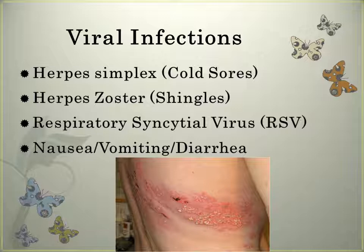RSV, the respiratory syncytial virus, is the most frequent cause of hospitalization for children under one year of age. It is a significant risk factor for the development of asthma up to age 13. It affects the epithelial cells of the respiratory tract and can cause those cells to shed into the bronchioles, causing obstruction. Signs and symptoms initially include rhinorrhea, pharyngitis, coughing, sneezing, wheezing, possible ear or eye drainage, and intermittent fever. As the illness progresses, you might see cyanosis, increased coughing and wheezing, tachypnea, and retractions. In severe illness, there may be tachypnea over 70 breaths per minute, poor air exchange, listlessness, apneic spells, and poor breath sounds.